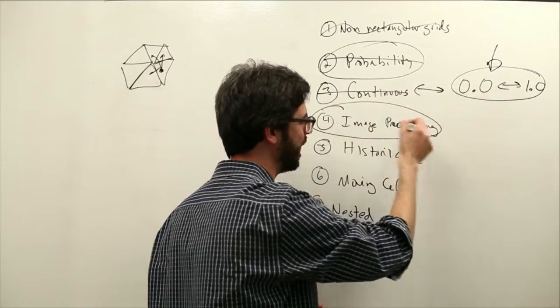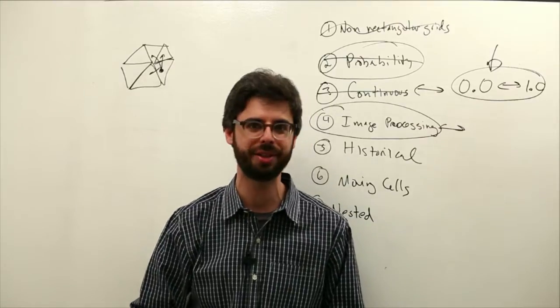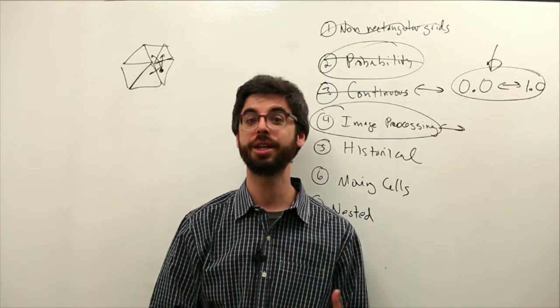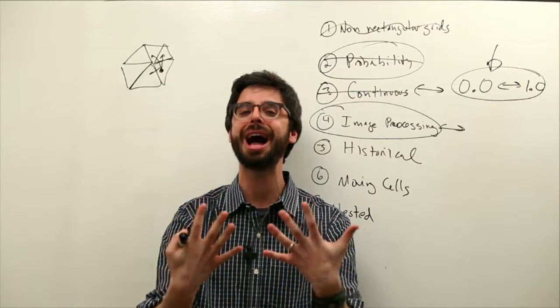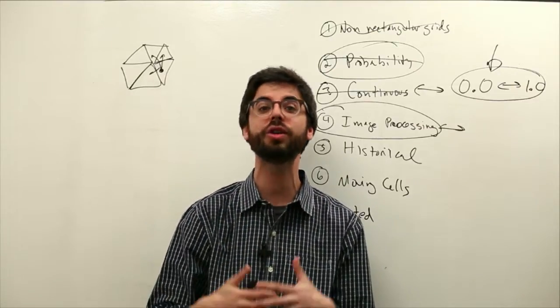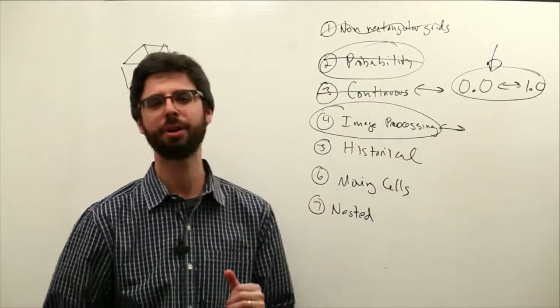I mentioned image processing in the previous video, but this is really key. So if you're looking for an application of this that might relate to an interactive system, are you doing something with depth data from the Kinect? Are you doing something with live images from a camera, from a movie? Could you create some type of special effect, motion graphics effect, over an image through CA-like rules?